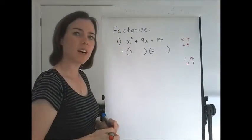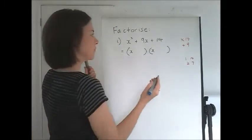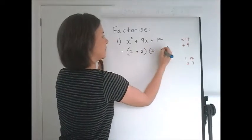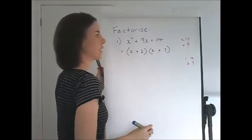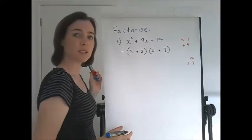Now 2 and 7 add to 9, so they're the ones we need. Positive 2 and positive 7. They must satisfy both those conditions.